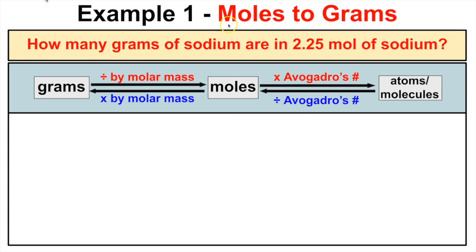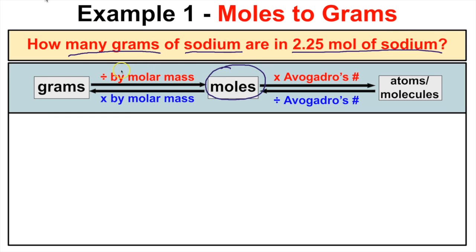In this very first example we are going to convert moles to grams. It says right here: how many grams of sodium are in 2.25 moles of sodium? If you read this question closely, we're asked to determine the number of grams of sodium if we have 2.25 moles of sodium. So the given quantity, or the known quantity, is in moles and we want to figure out how many grams this is.